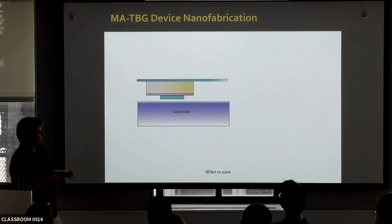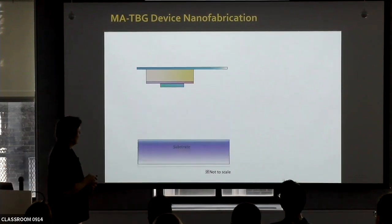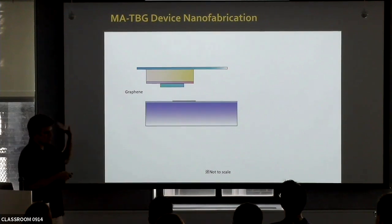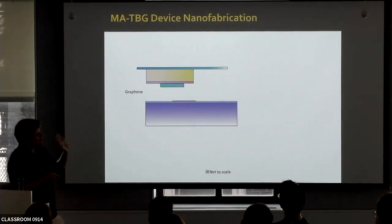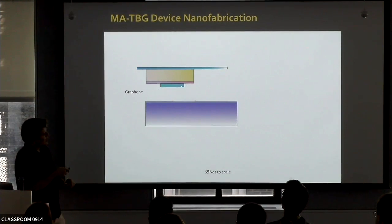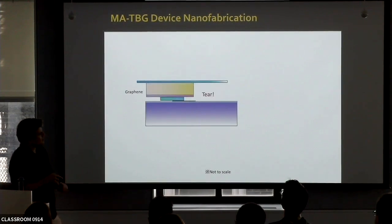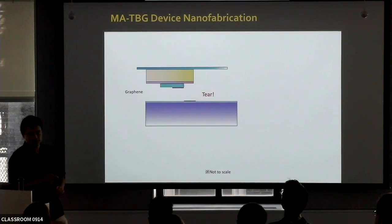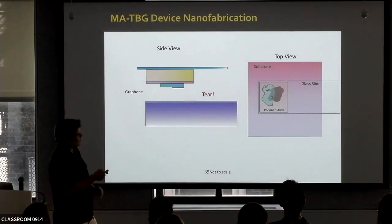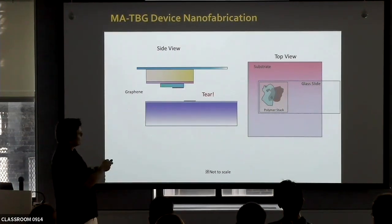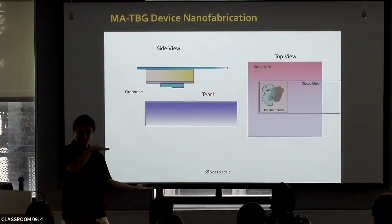The tricky part is that we position our polymer and hBN such that it is halfway on top of the graphene, then we come down and tear half of the graphene. From the top, we now have half of the graphene on the substrate and the other half on the glass slide with the hBN. These two pieces come from the same piece of graphene, so they are crystallographically aligned with respect to each other.